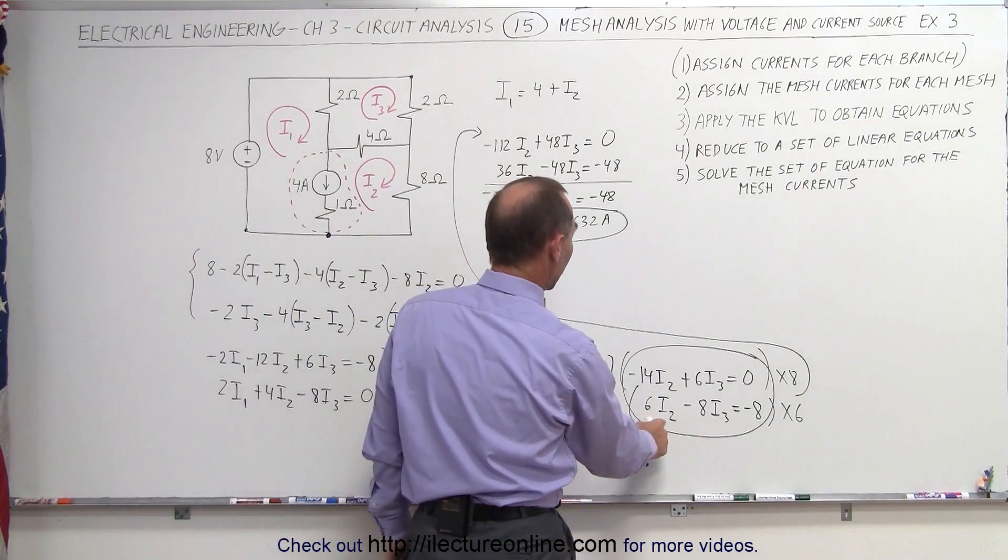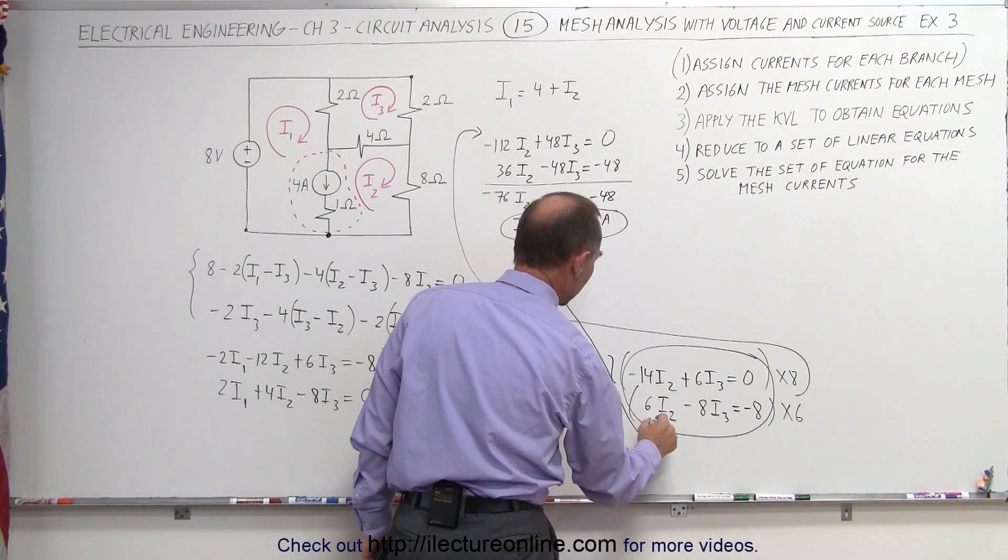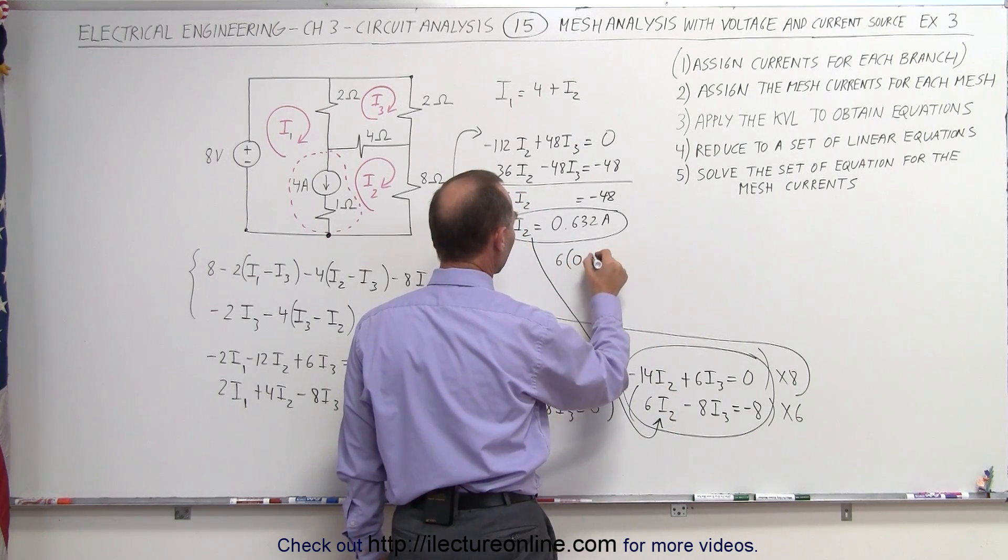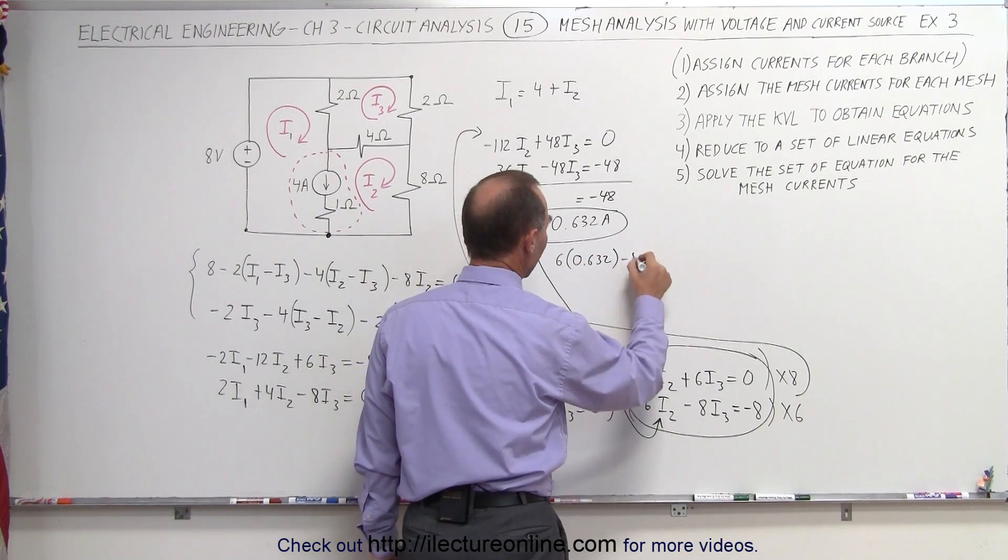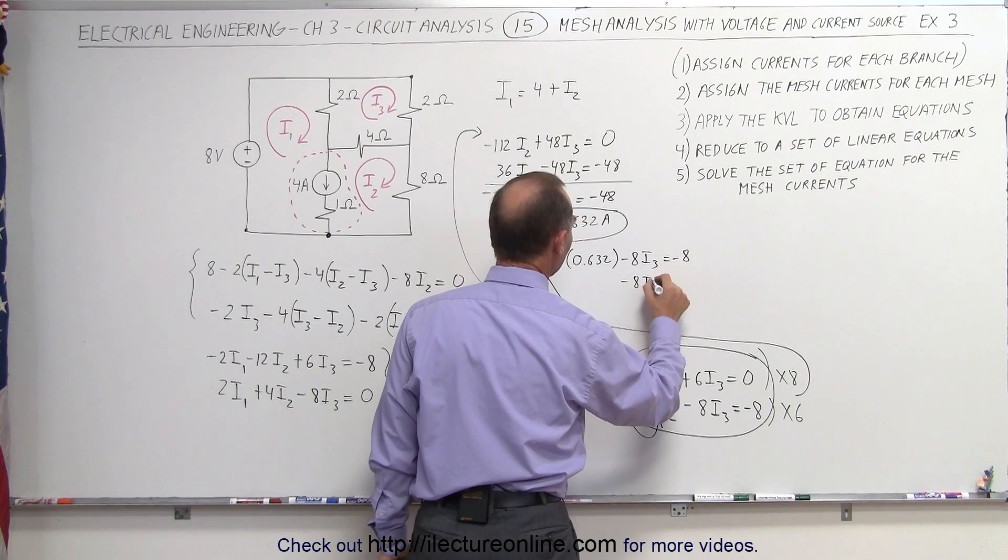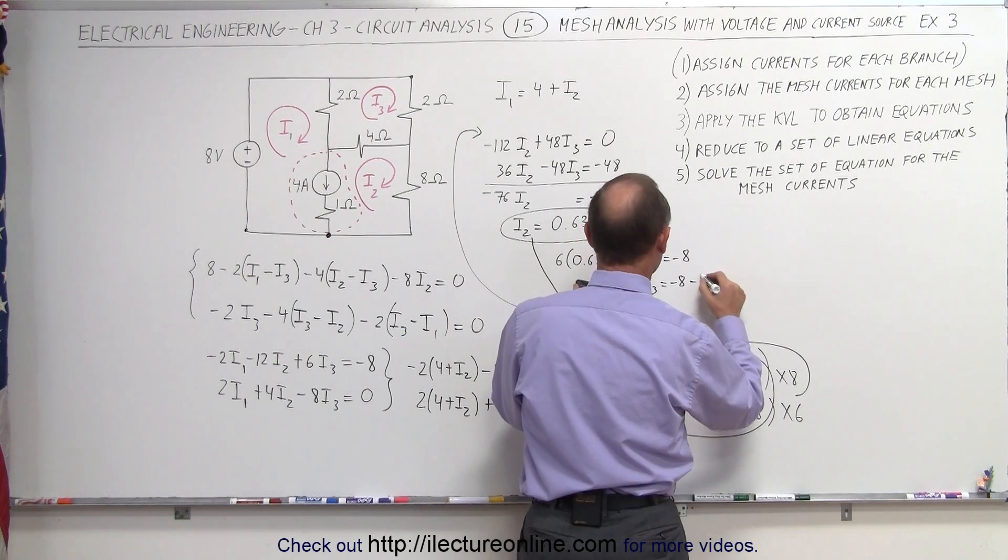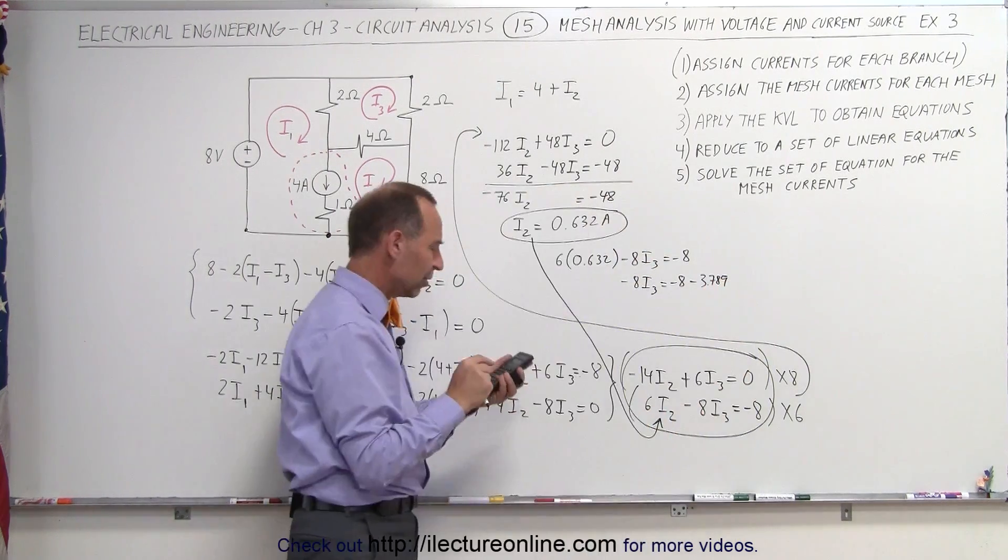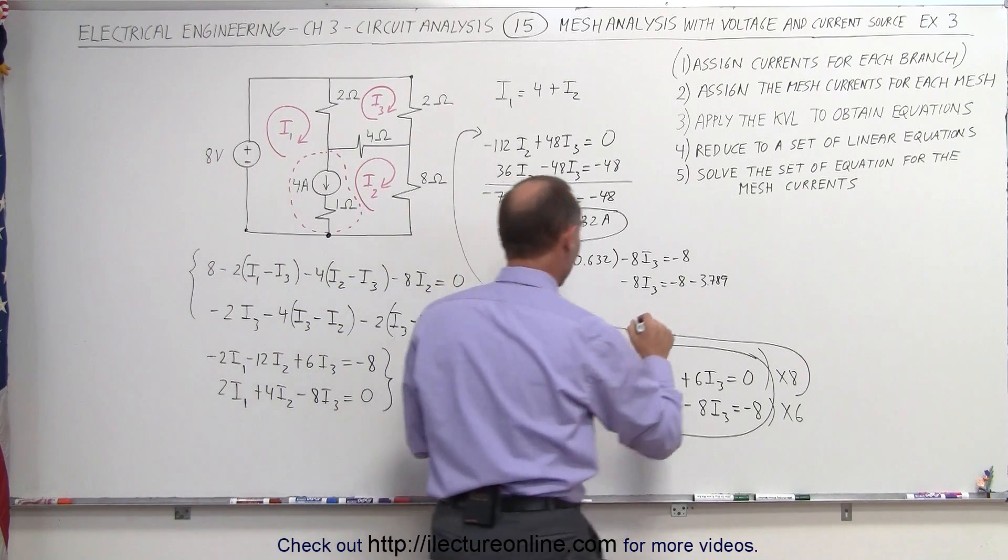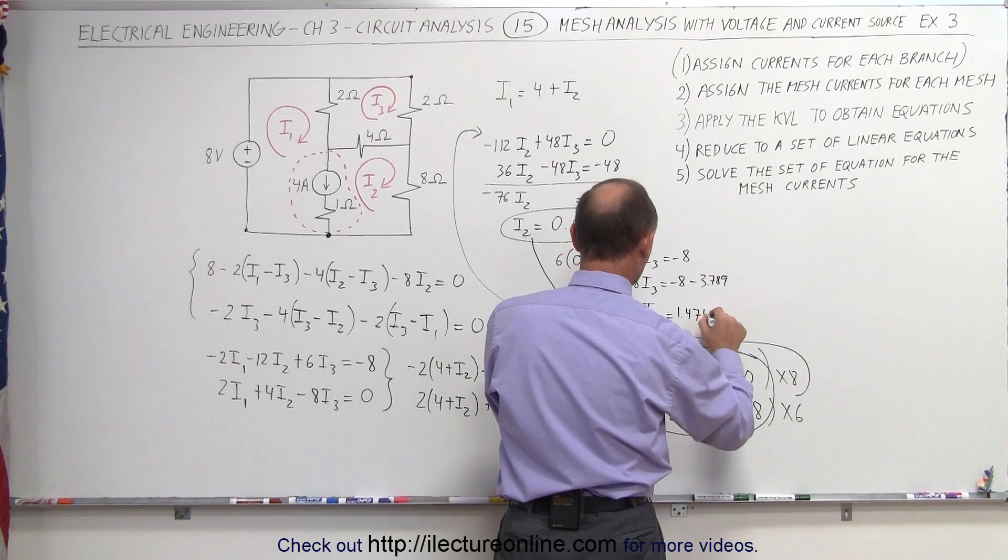Now we go to one of these two equations. I can go ahead and grab this one right here and substitute I2, what I2 is equal to, in here, which means that the equation now becomes 6 times, instead of I2 we write 0.632, minus 8 I3 equals minus 8. Or minus 8 I3 is equal to minus 8 minus the product of those two, 3.789, add 8 to that plus 8 and divide by 8. And we get I3 is equal to a positive 1.474 amps.